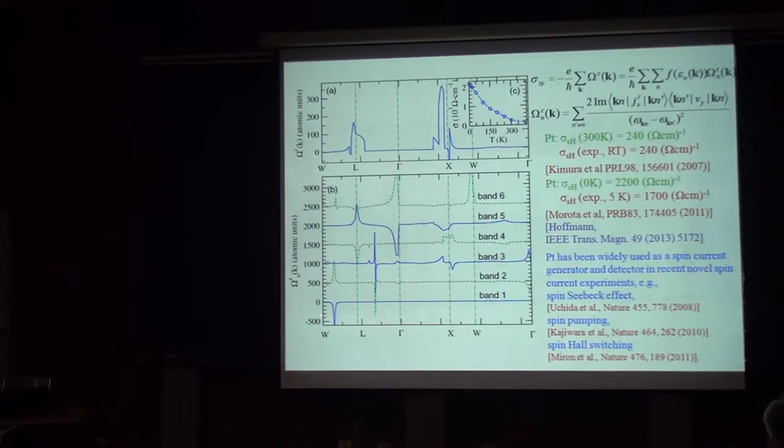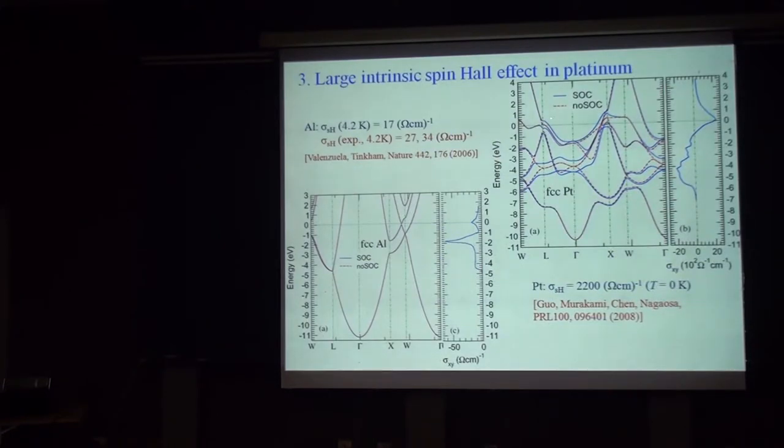Now, if these two bands are both occupied, then the contribution will be cancelled. Because one is positive, and the other is negative. However, imagine that if one is unoccupied, and the other one is occupied, then this cancellation will not happen. And this is exactly happening in this case. You can see that the spin-orbit coupling split the band, pushed one above the Fermi level, and the other going down.